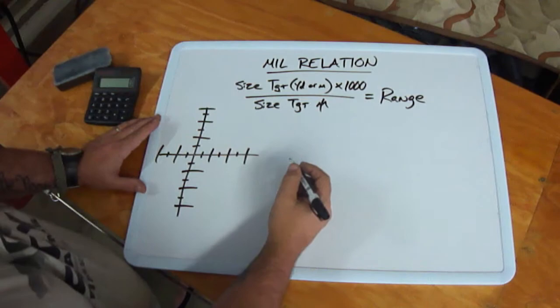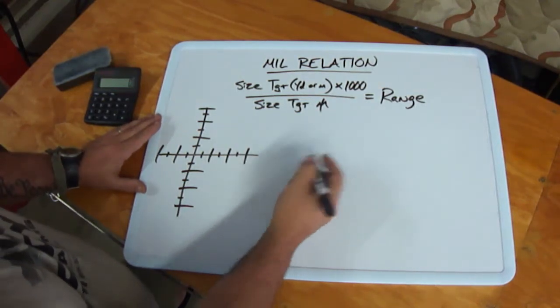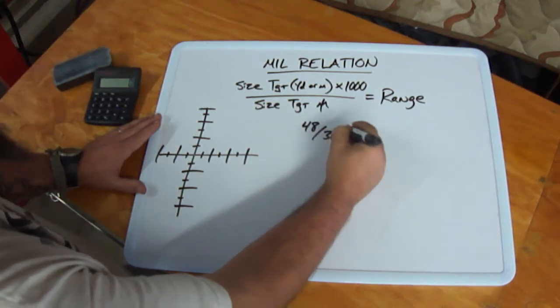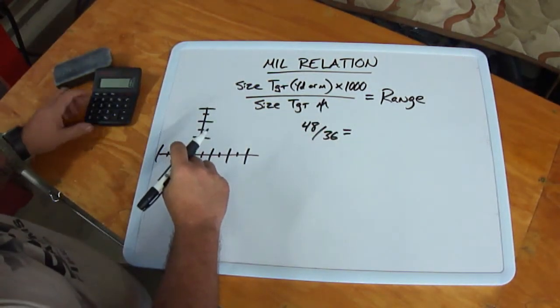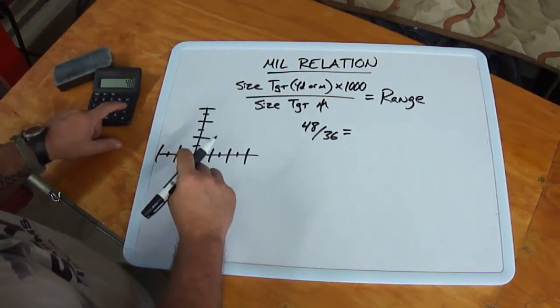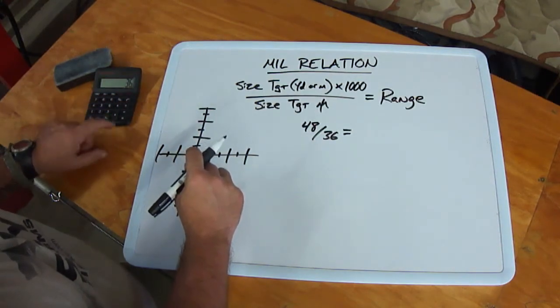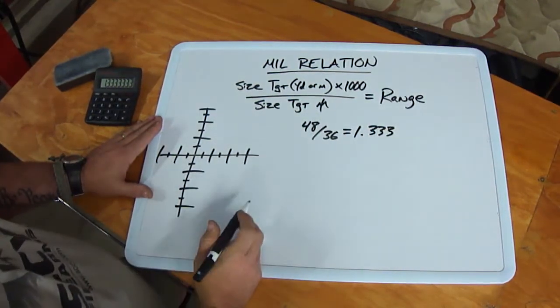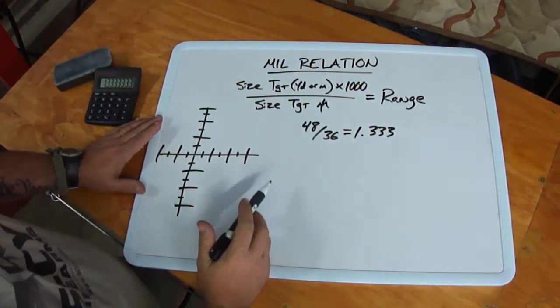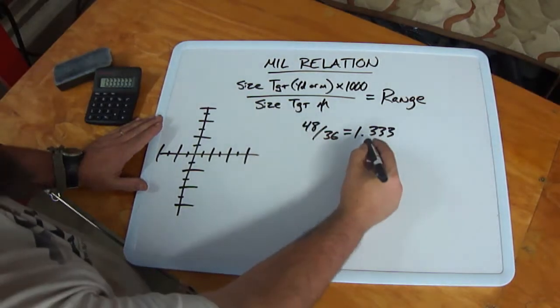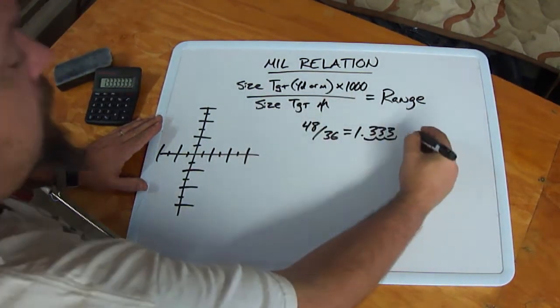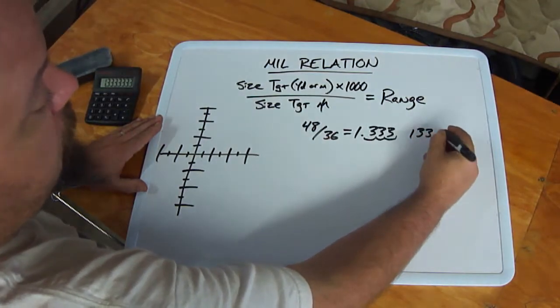So let's say we have some random object that's 4 feet tall. That's 48 inches and we divide that by 36. That's going to give us, and I am going to use a calculator here because I don't want this video to be 6 hours long, 1.333. When we multiply that by 1,000 we can either do it on our calculator or we can just move our decimal point over 3 spots. It gives us 13.333.